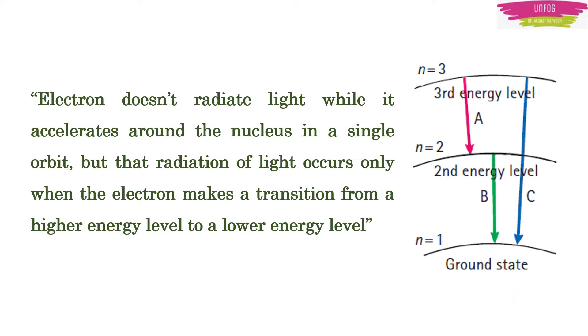Bohr boldly deviated from classical physics by stating that the electron doesn't radiate light while it accelerates around the nucleus in a single orbit. But the radiation of light occurs only when the electron makes a transition from a higher energy level to a lower energy level.